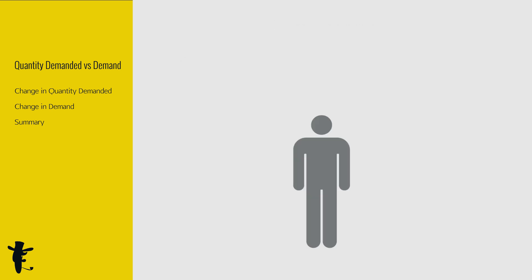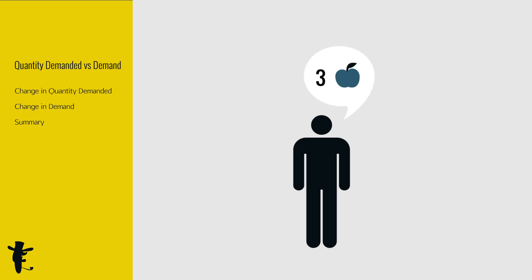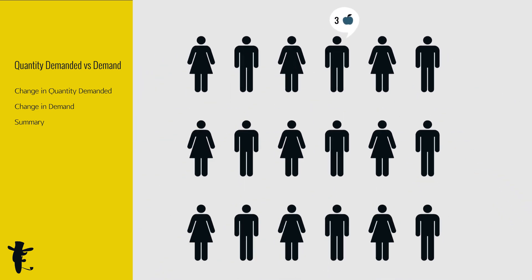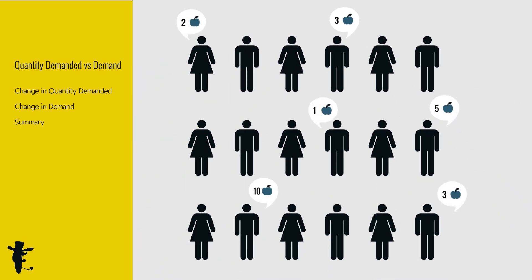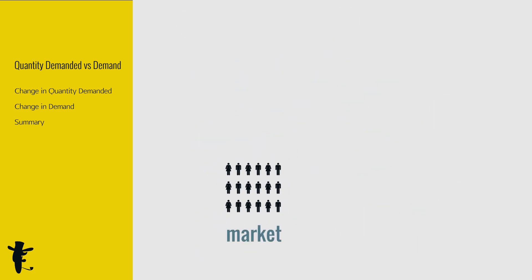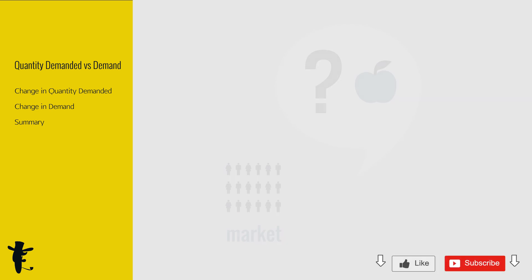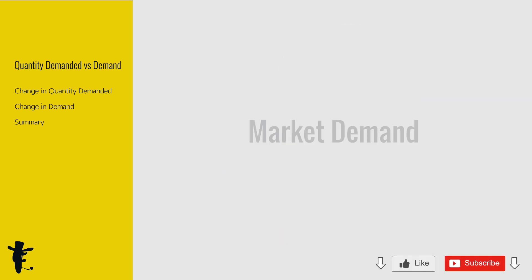So far, we've been talking about individual demand. How do we derive the market demand? In other words, how many apples does the market want? If you like this video, remember to like and subscribe. Next up: market demand.